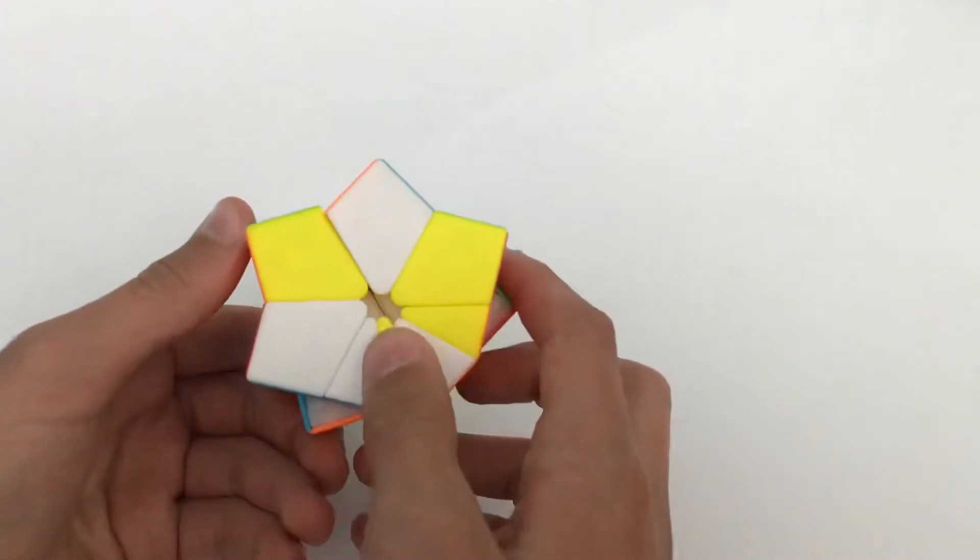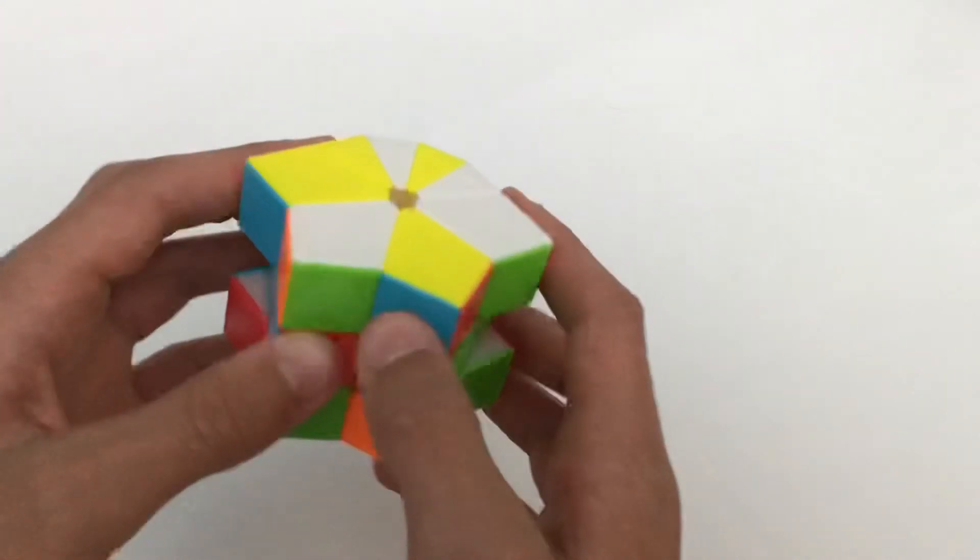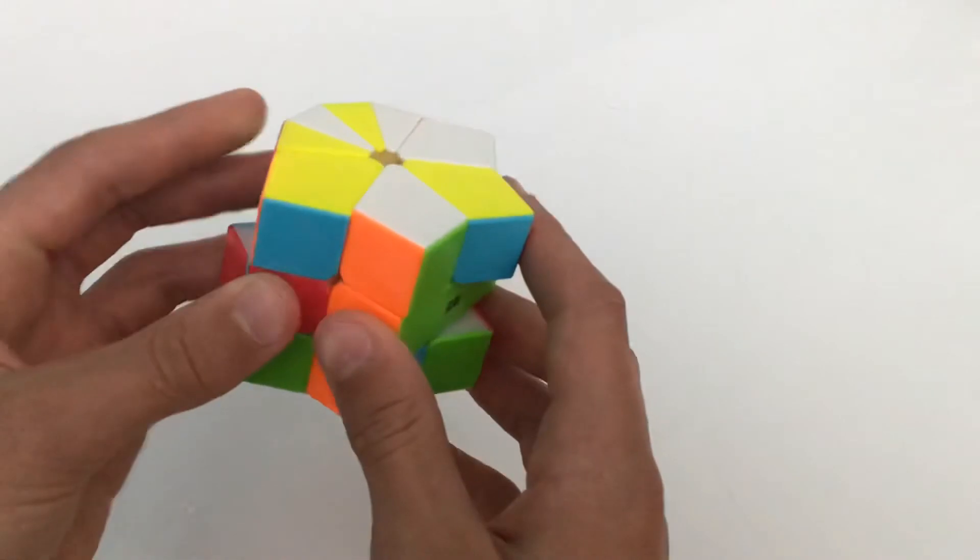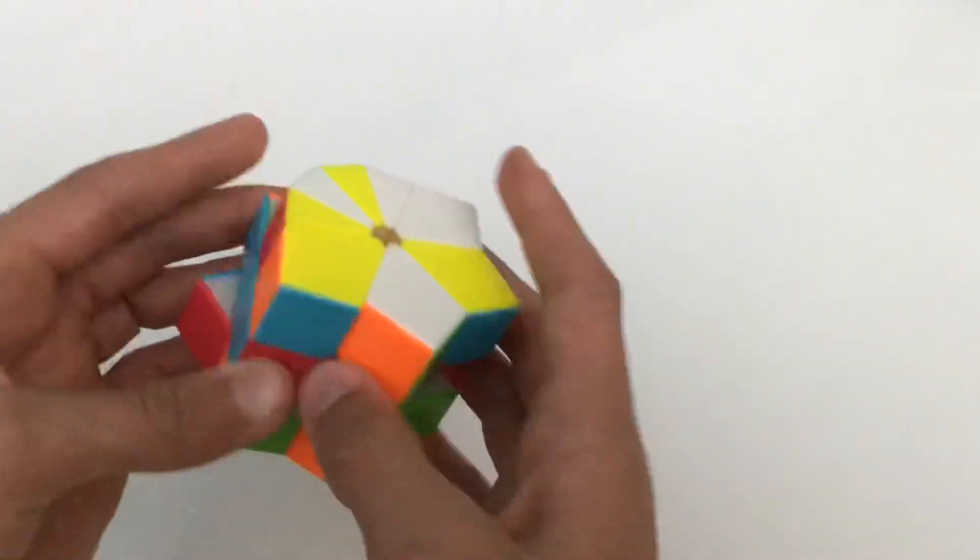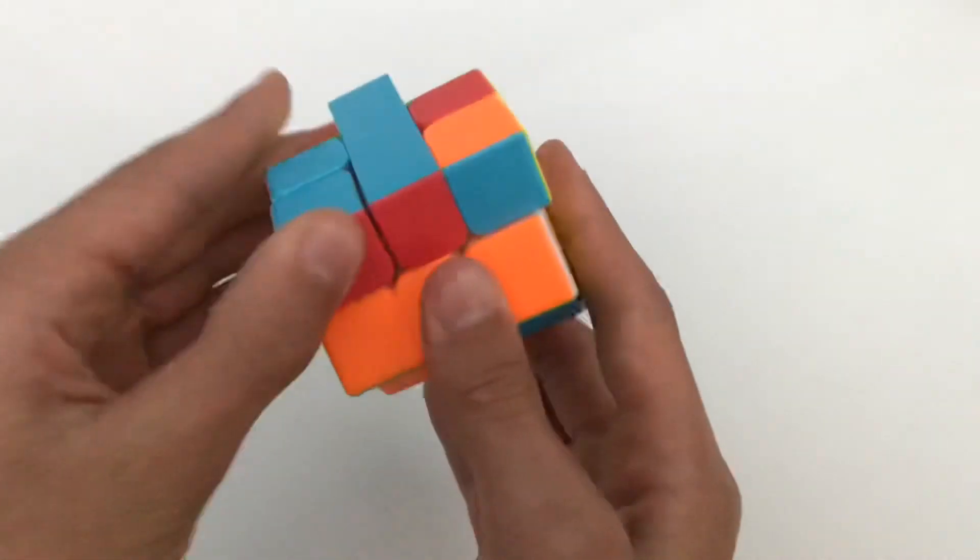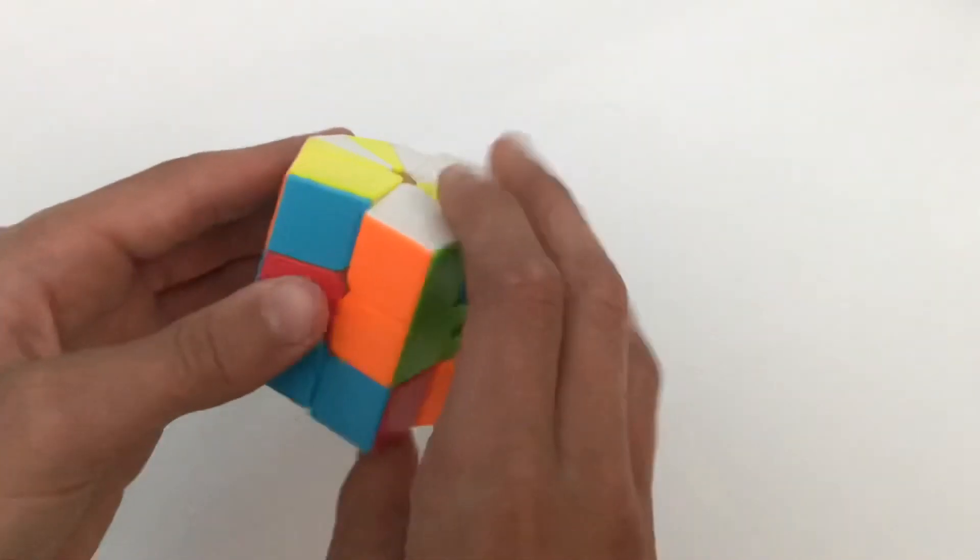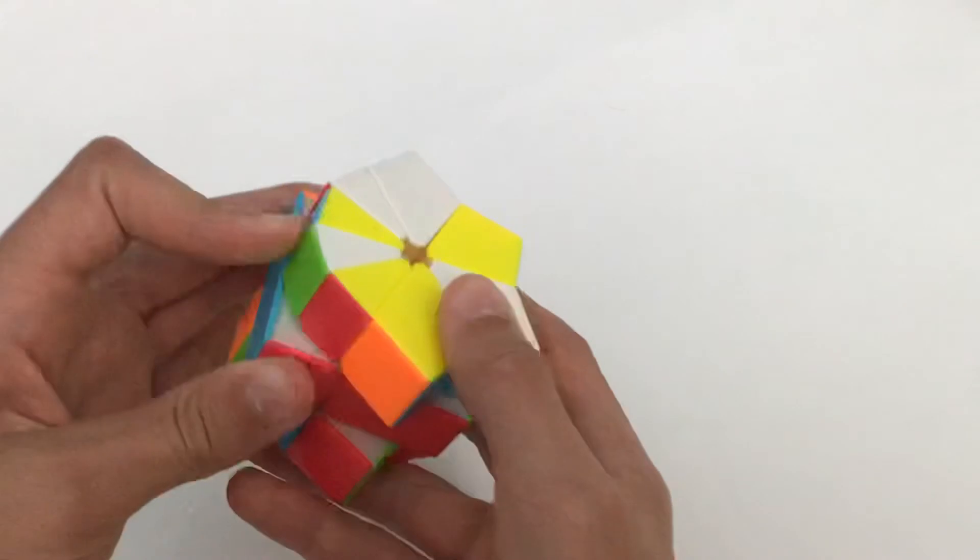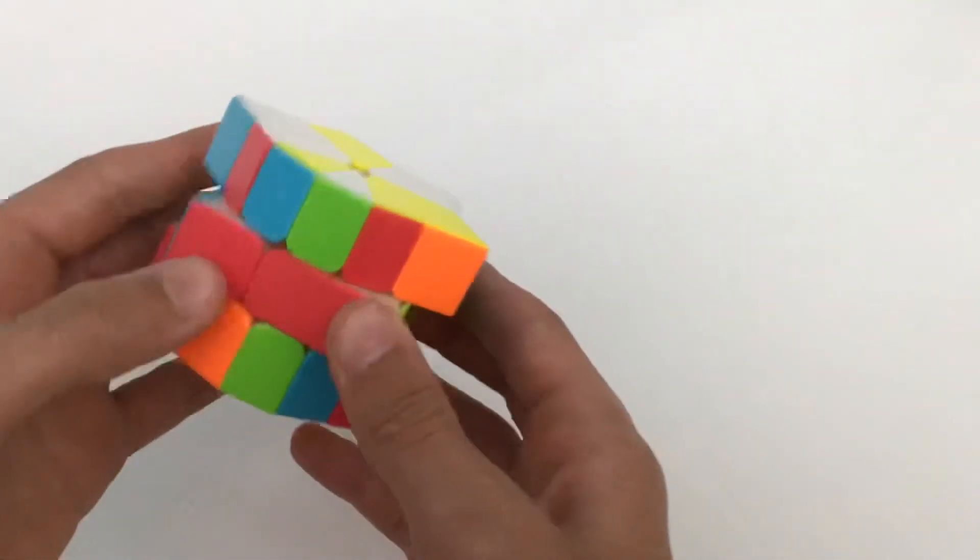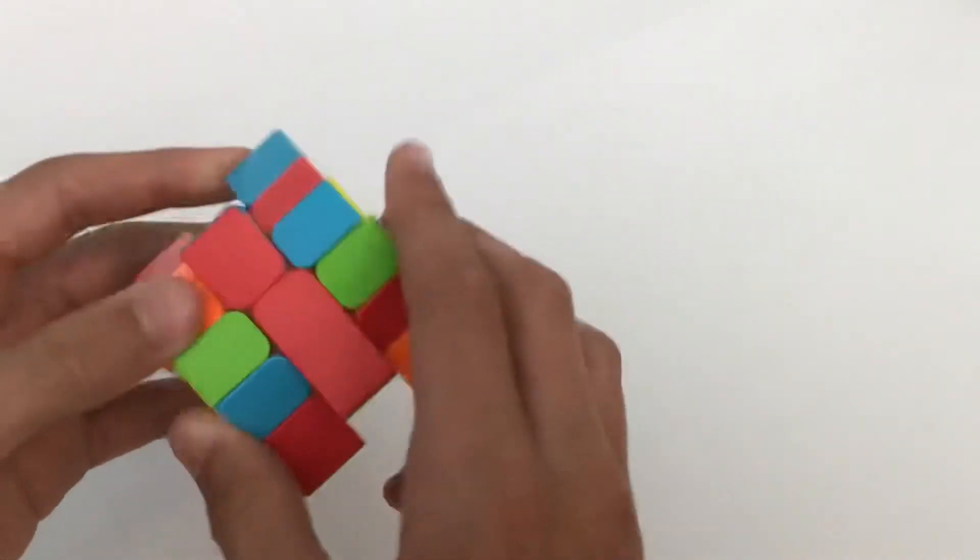And now as you can see I have the four and I have the other four. So now what you need to do is you have that four right there and then you have that four right there. So you just need to do one slice move and then you can just put it back into cube shape and reverse how you did it at the beginning.